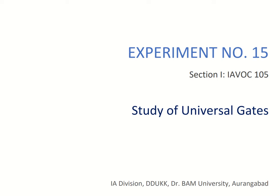In this experiment we will be studying the universal gates. There are two universal gates in digital logic: one is the NAND gate and the other is the NOR gate. They are called universal gates because you can make any gate out of these two. The fundamental gates are AND, NOT, and OR — all three can be made with the help of NAND gate and NOR gate. The TTL IC numbers are 7400 for NAND gate and 7402 for NOR gate.